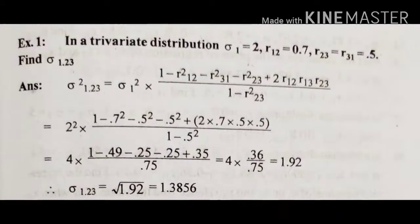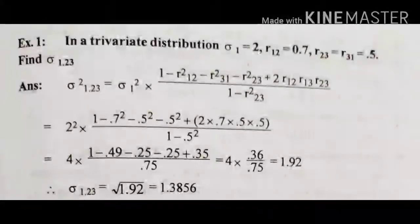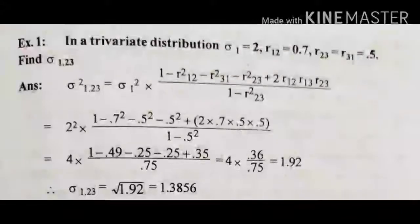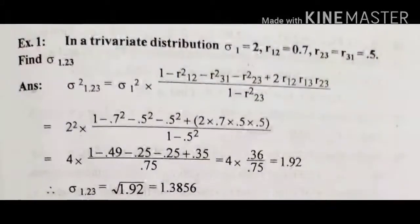This gives 4 into (1 minus 0.49 minus 0.25 minus 0.25 plus 0.35) divided by 0.75, equal to 4 into 0.36 divided by 0.75, equal to 1.92. Therefore σ₁.₂₃ equals √1.92 equals approximately 1.3856. This is from the Partial and Multiple Correlation and Regression chapter.